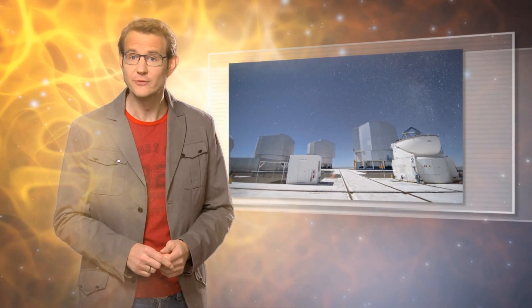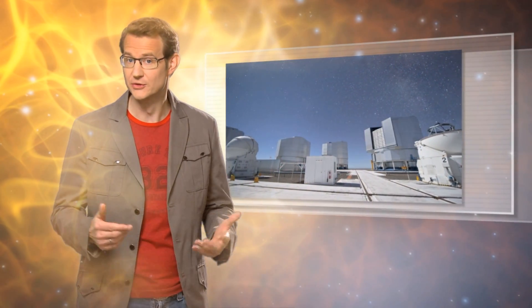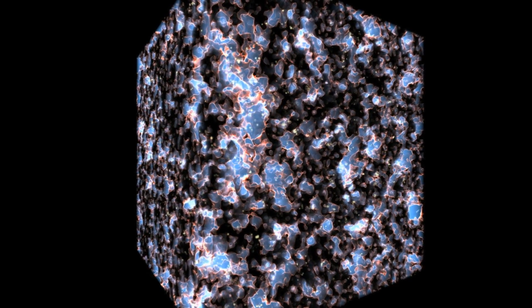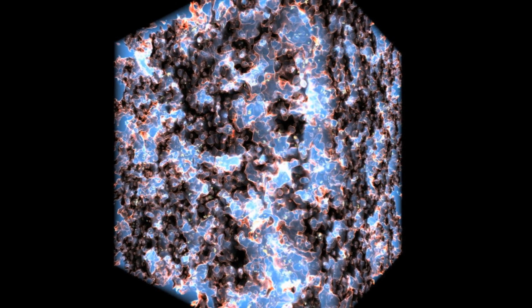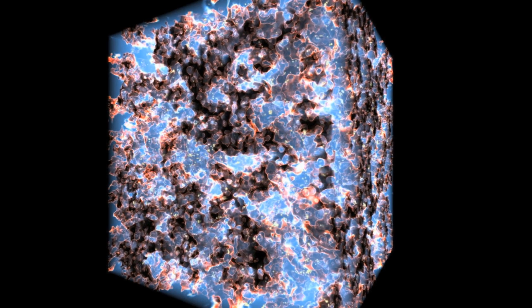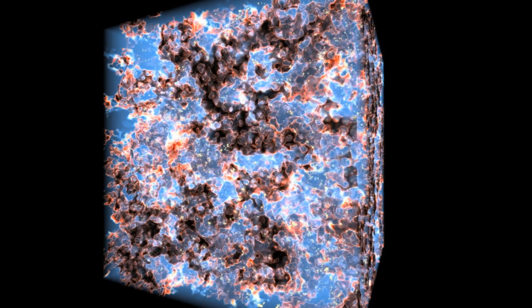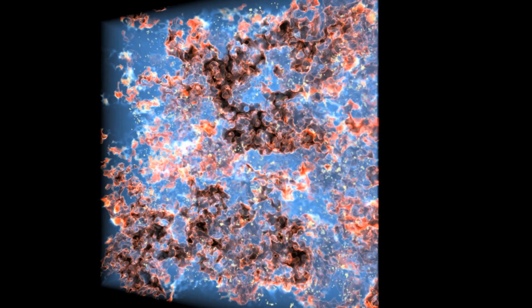Holding the record for having measured the redshift of the most distant object in the universe is not just a trophy to hang on the wall. It does have important astrophysical implications. This is the first time that we've managed to obtain spectroscopic observations of a galaxy from the era of reionization. In other words, from the time when the universe was still clearing out the hydrogen fog.